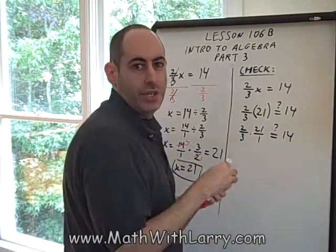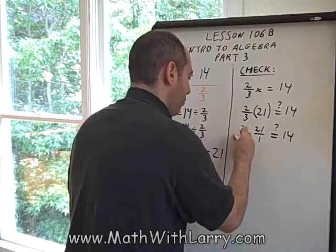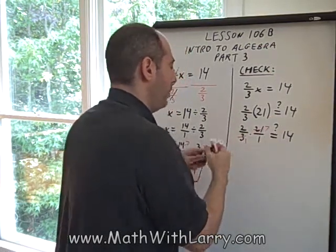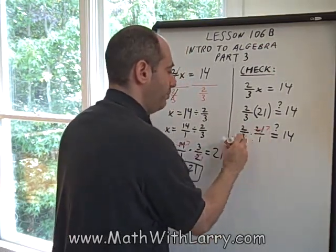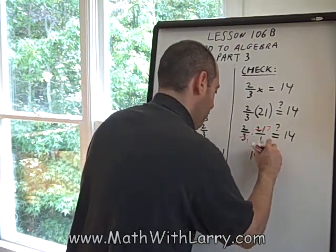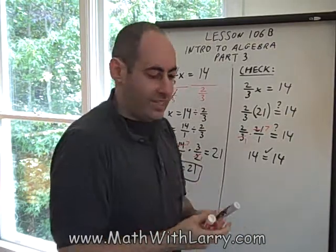Now, we can do some cross-cancelling. Three goes into three once. Three goes into 21 seven times. Multiplying across, we have two times seven is 14/1, which is just 14. Okay, so that shows that 21 is the correct answer.